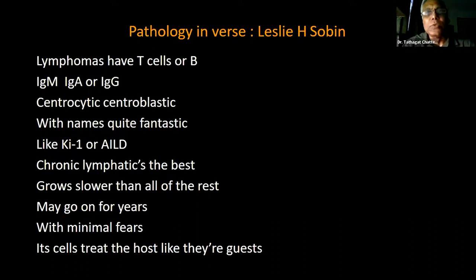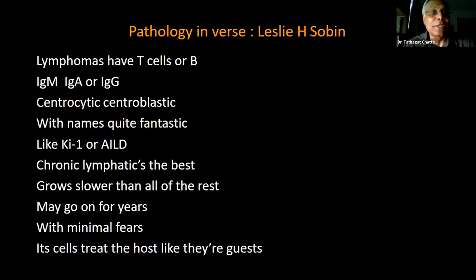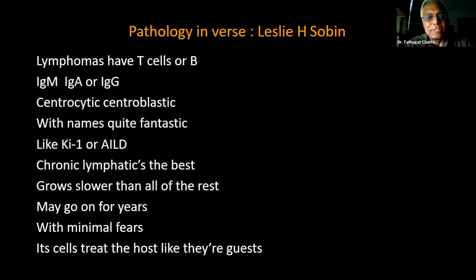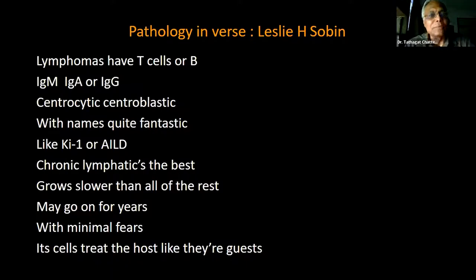Here is one such snippet from Leslie H. Sorbin — a book of pathology in verse: 'Lymphomas have T cells or B, IgM, A or G, Centrocytic, Centroblastic, names quite fantastic, like KI1 or AILD. And even then we knew that chronic lymphatic is still the best, grows slower than all of the rest, may go on for years with minimal fears, its cells treat the host like their guests.' Every line in this poetry has the history of lymphoma within it — that is how we had brilliant teachers.